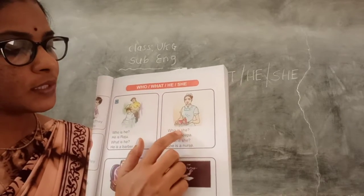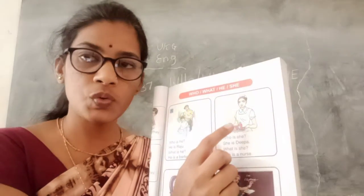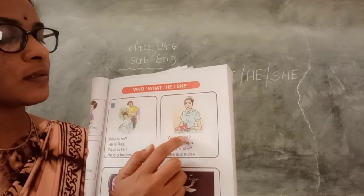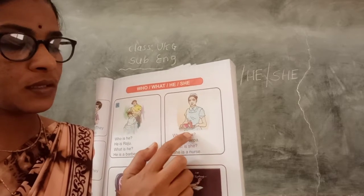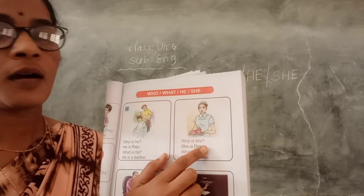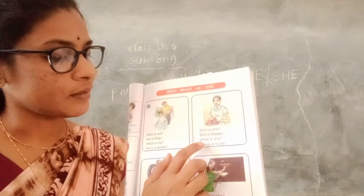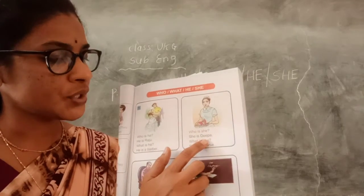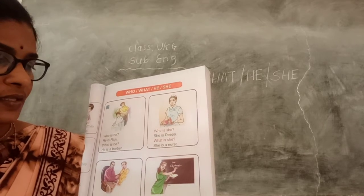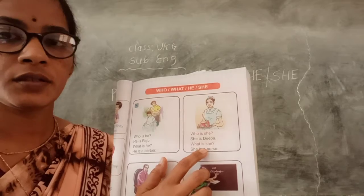Next. Who is she? When we refer to a girl, we should use she. Who is she? She is Deepa. What is she? She is a Nurse.